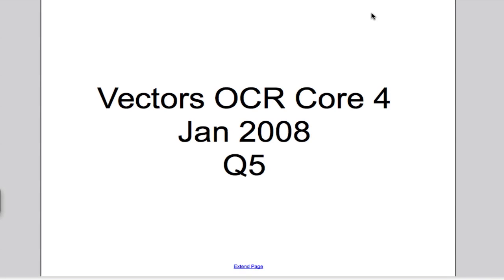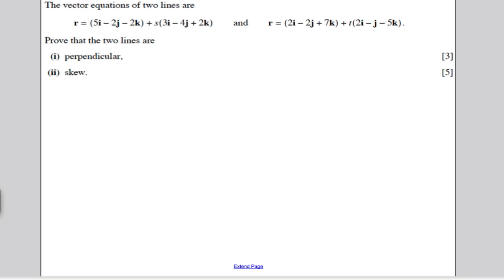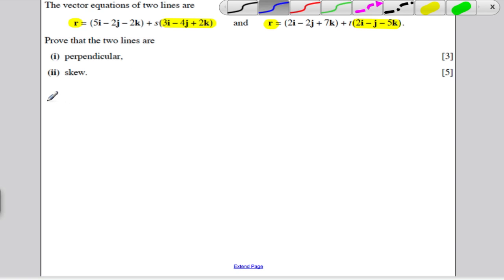In this video I'll answer the January 2008 question 5, a vectors question. It was worth 8 marks. Here are the vector equations of two lines — remember, a vector equation is a point on the line plus a multiple of the direction of the line. If you want to prove two lines are perpendicular, you want to show that the dot product or scalar product of their directions is zero.